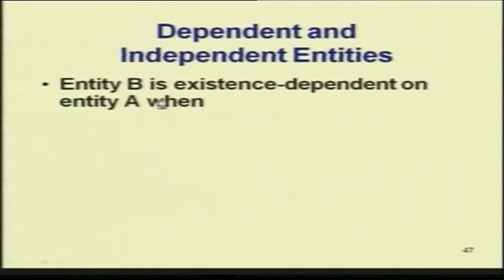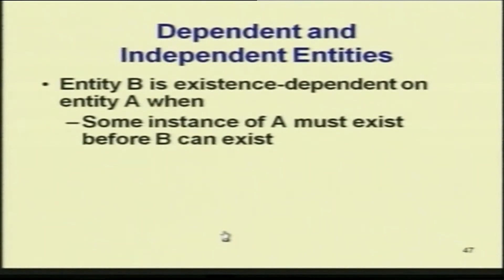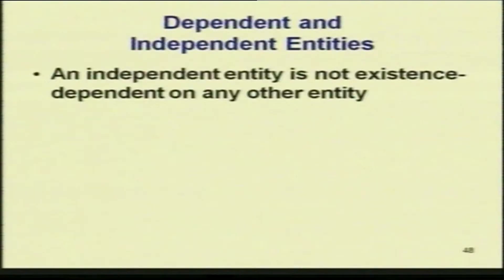Now let us talk about strong and weak entities. When you talk about an application, you can have dependent and independent entities. Entity B's existence is dependent on entity A — some instance of A must exist before B can exist. This is the meaning of dependence. If A ceases to exist, B also ceases to exist. An independent entity is not existence-dependent on another entity, while a dependent entity is.